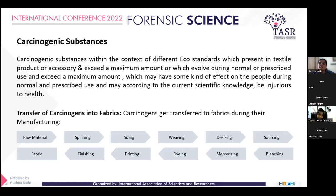There is a whole fabric manufacturing process. Since we start from raw material to getting fabric, the raw material undergoes spinning, then sizing, weaving, desizing, mercerizing, dyeing, printing, and various kinds of finishing processes, and then we get the finished fabric. In all these processes, carcinogenic elements get transferred.